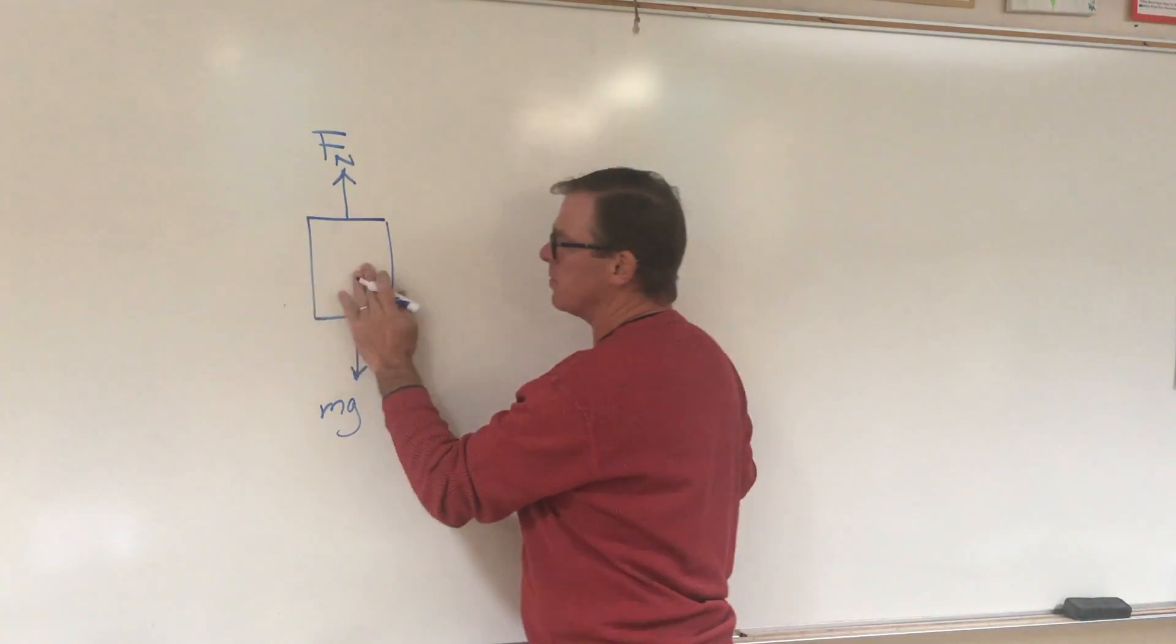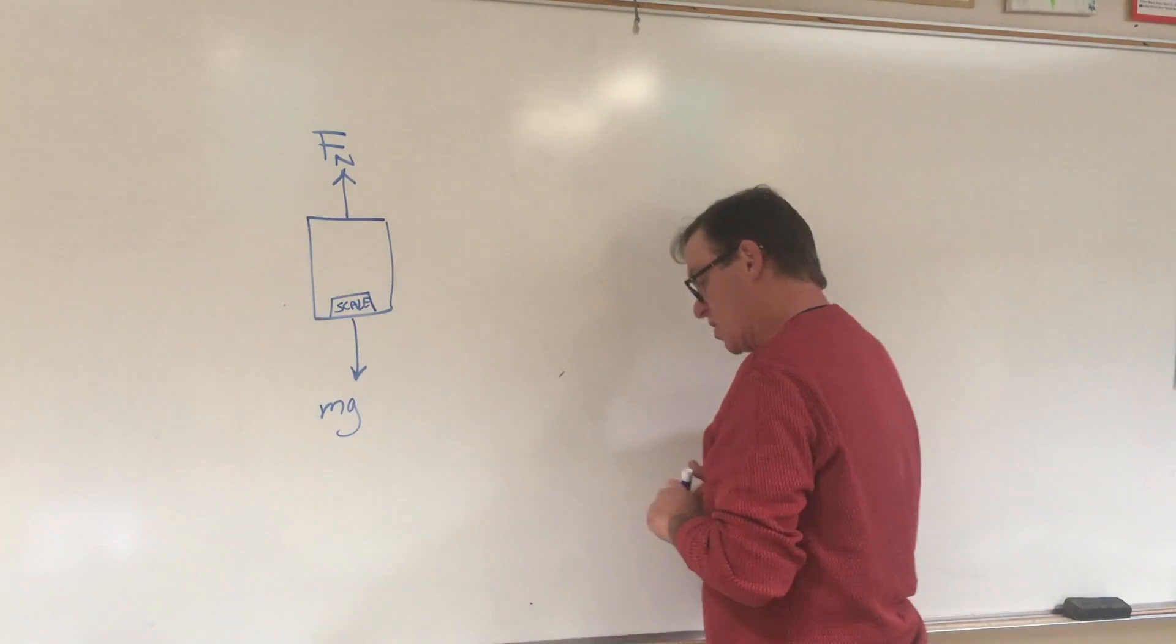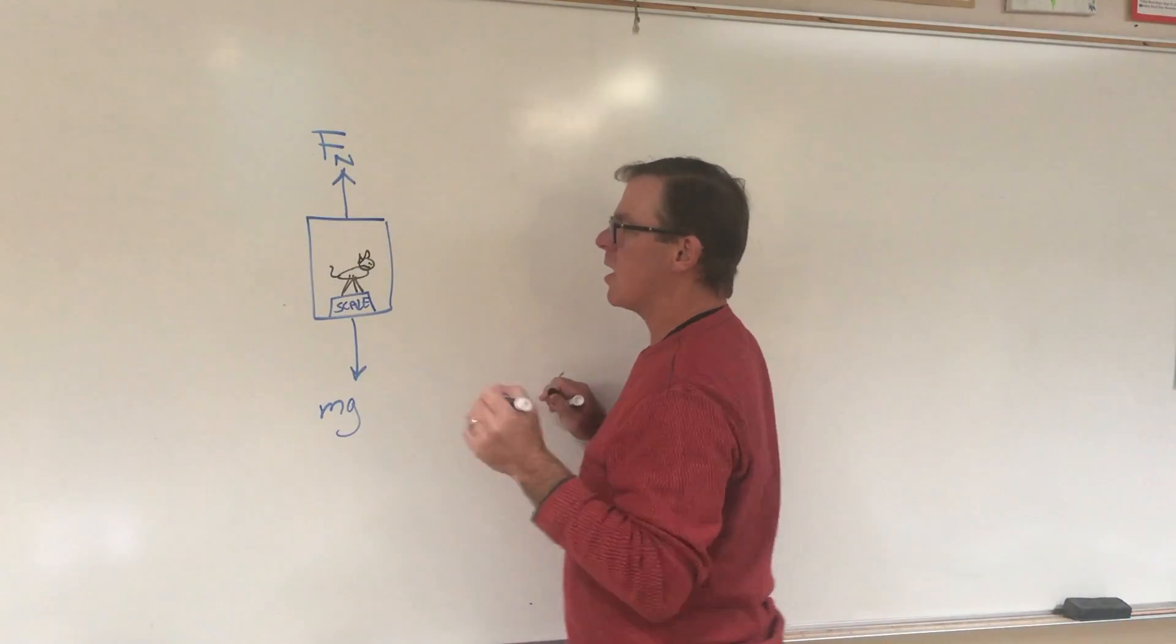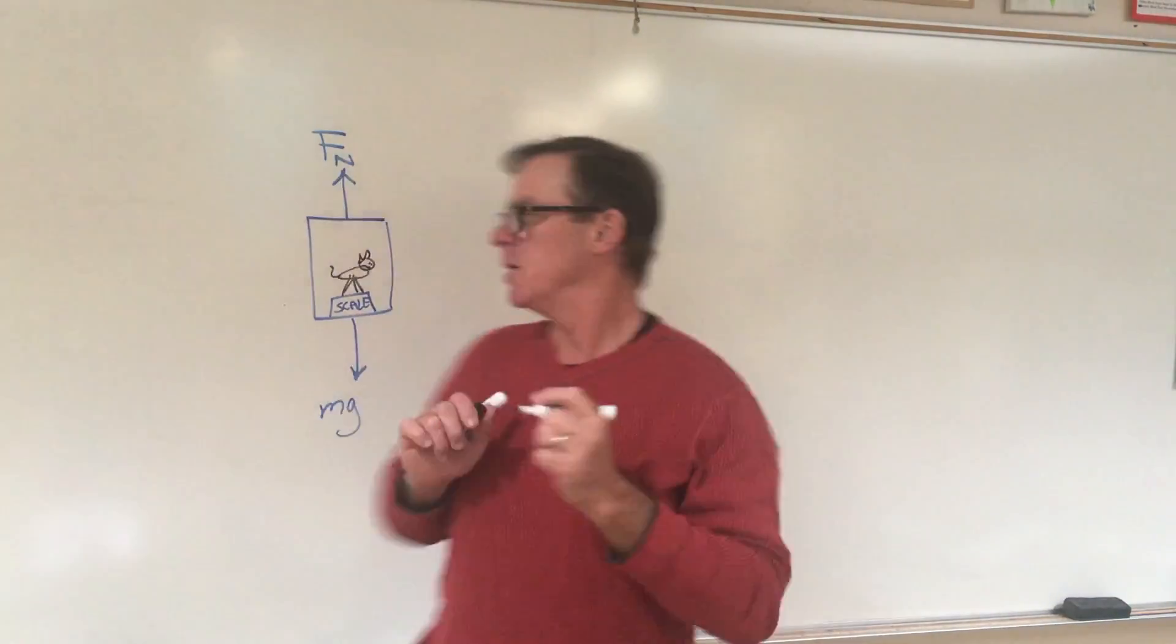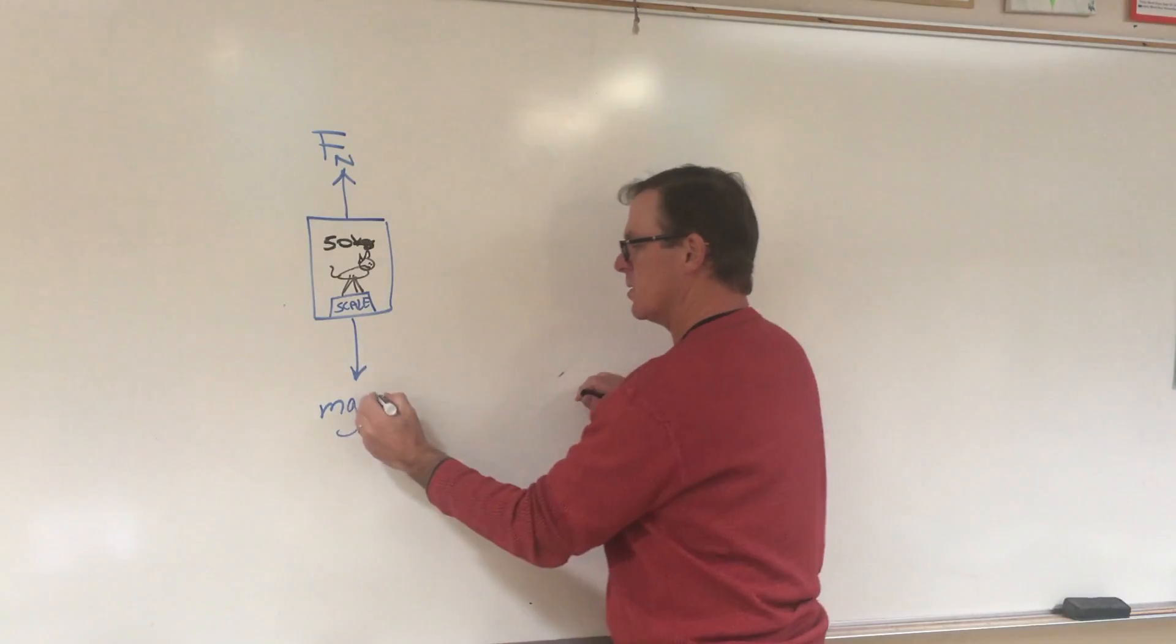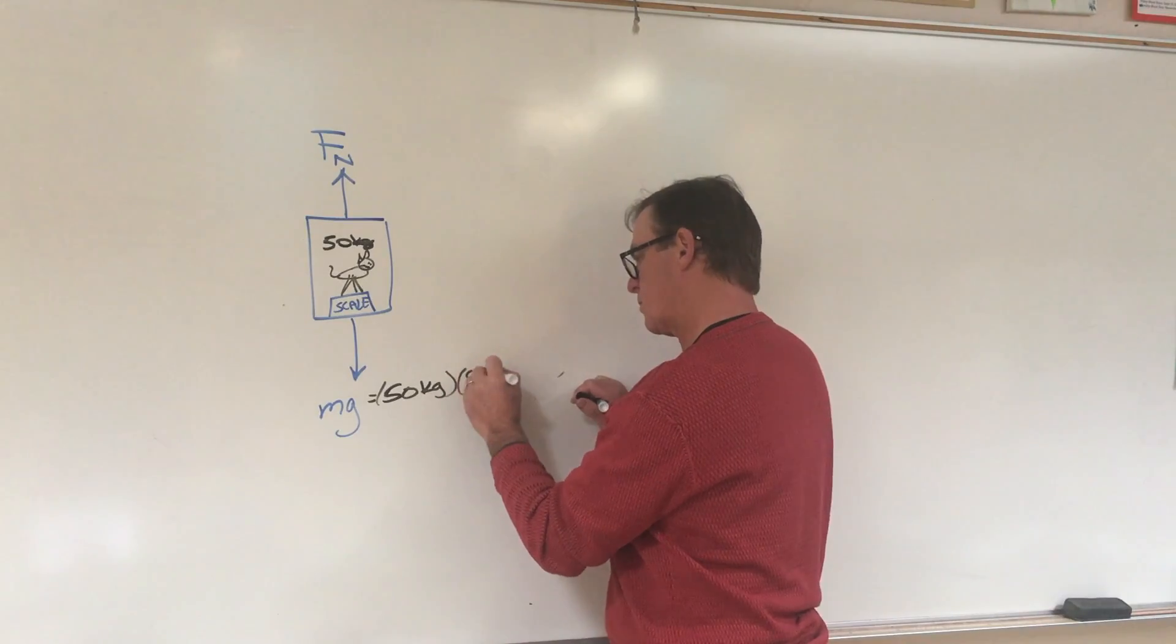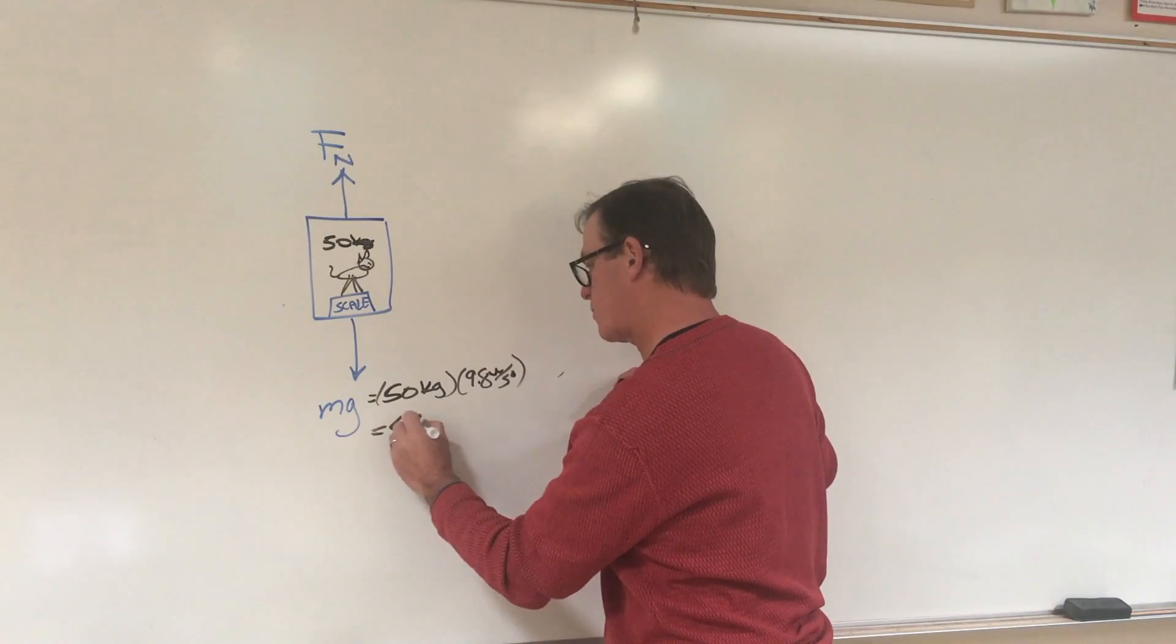Now in this problem, we have a scale in an elevator, and there's a dog on it. The dog has a mass of 50 kilograms. So let's calculate quickly what the weight is. The weight would be 50 times 9.8. That's 490.